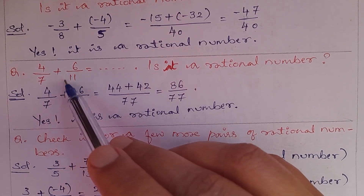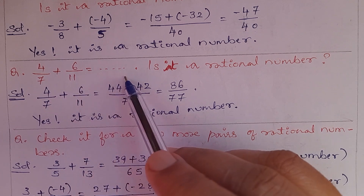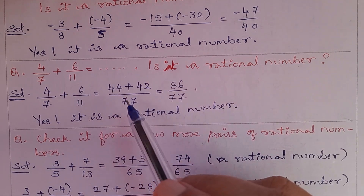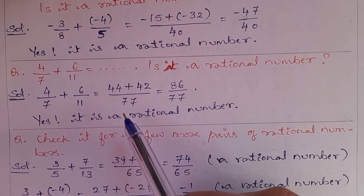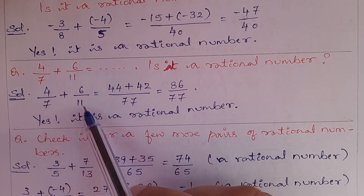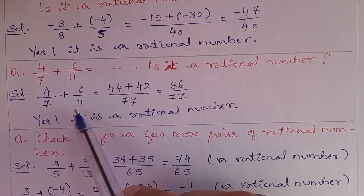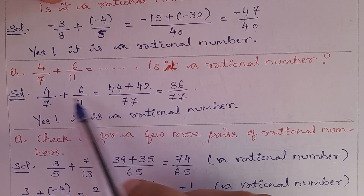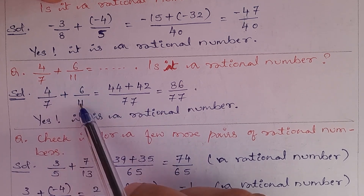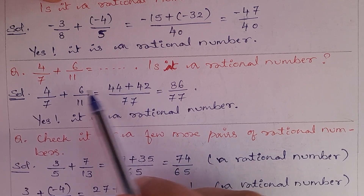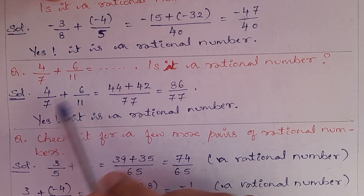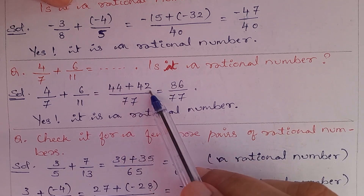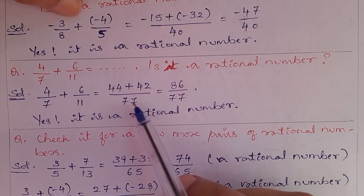Next: 4/7 + 6/11 — is it a rational number? Yes, it is a rational number. Take the LCM of 7 and 11, which is 77. Using the butterfly method: 4 × 11 = 44, plus 6 × 7 = 42. Adding these gives 86. So the answer is 86/77.